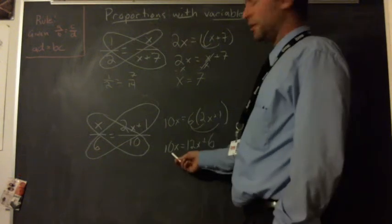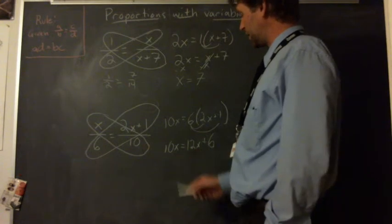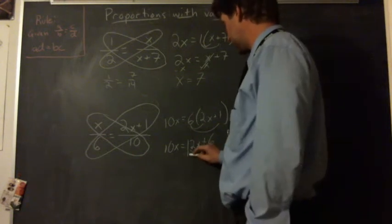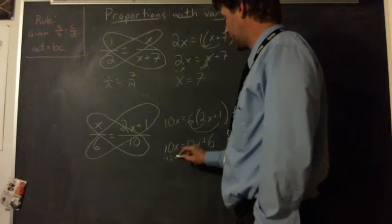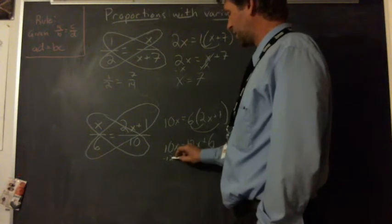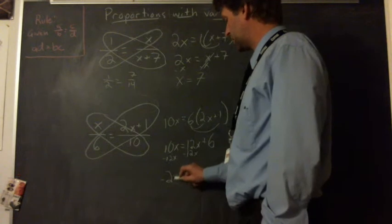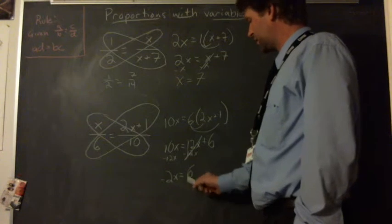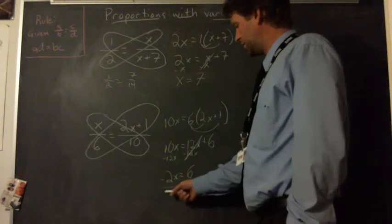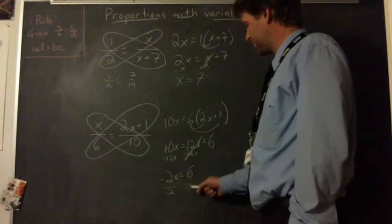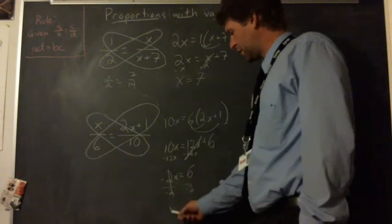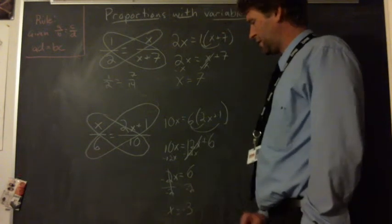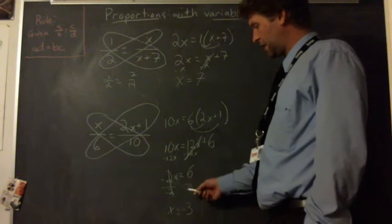Now usually we subtract the smaller variable, but as it's all by itself, we'll subtract the larger one so we have an x on one side and a number on the other. Minus twelve x both sides. Ten x minus twelve x gives us negative two x. Twelve x is cancel, gives us just six. Divide both sides by negative two. Negative two x divided by negative two is negative three. Positive divided by a negative is a negative.